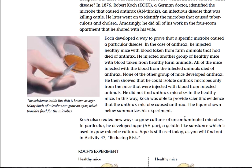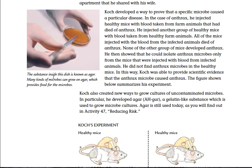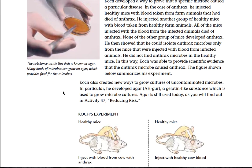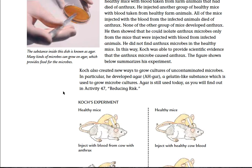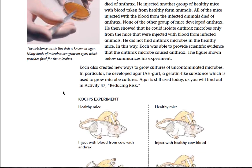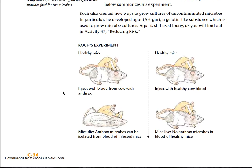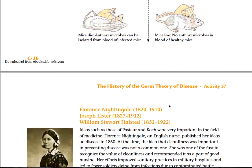The figure shown below summarizes this experiment. The substance inside the dish is known as agar — many kinds of microbes can grow in agar, which provides food for the microbes. Koch also created new ways to grow cultures of uncontaminated microbes. In particular, he developed agar, a gelatin-like substance used to grow microbe cultures. Agar is still used today. Koch's experiment: healthy mice injected with blood from a cow with anthrax — mice die, and anthrax microbes can be isolated from their blood. Healthy mice injected with healthy cow blood — mice live, and no anthrax microbes are found in their blood.